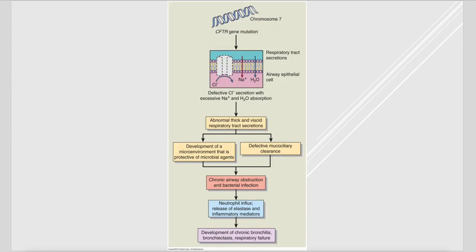The CFTR mutation — located on chromosome 7 — encodes a defective chloride conductance channel. Since the channel is defective, chloride cannot cross the membrane, which not only stops sodium from being conducted but actually pulls sodium into the cell. Water follows sodium into the cell, so the extracellular space — where you need water and sodium to loosen mucus — is depleted, resulting in that very thick mucus.